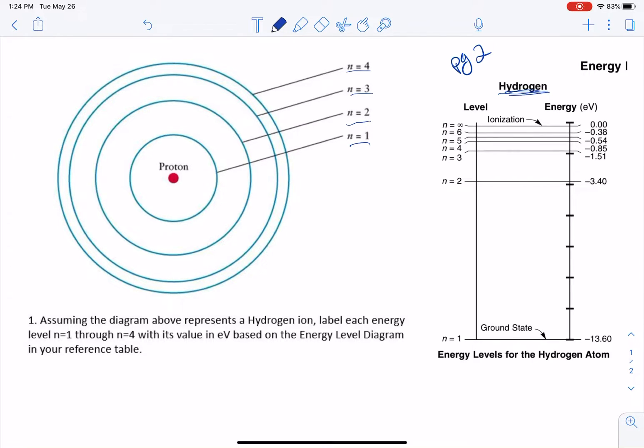So it says, number 1, assuming the diagram above represents a hydrogen ion, label each energy level n1 through n4 with its value in eV based on the energy diagram in your reference table. So basically what we're going to be doing is we're going to be looking at n1, n2, n3, and n4.